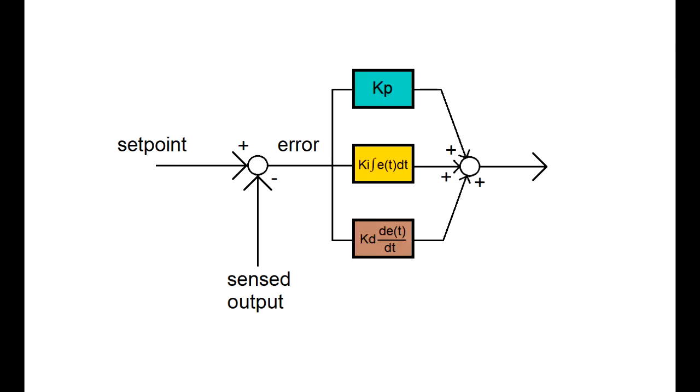The PID controller's job is to essentially take this error signal and perform three separate mathematical operations on it, sum up their results and cleverly produce an output that will drive the system or process to the desired set point.